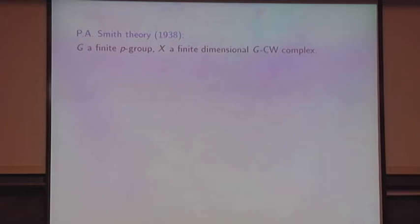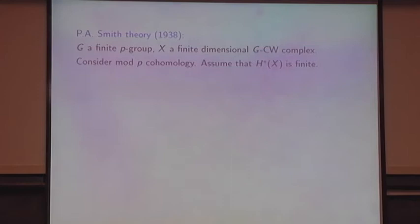I'm going to tell you about P.A. Smith's theory. This dates from 1938 in impenetrable papers, but the insight was there — beautiful theorems. Let G be a finite p-group, and let X be a finite dimensional GCW complex. Consider mod p cohomology; all cohomology in the next couple of slides is mod p. As an algebraic topologist, nothing is in characteristic zero. We assume that the cohomology of X is finite — finite dimensional in each degree, zero in all but finitely many degrees.